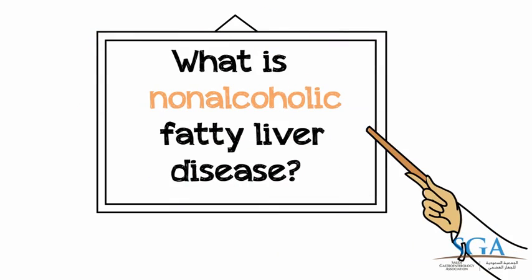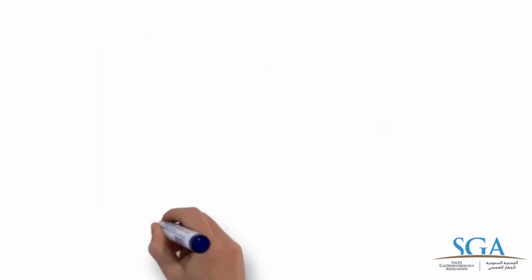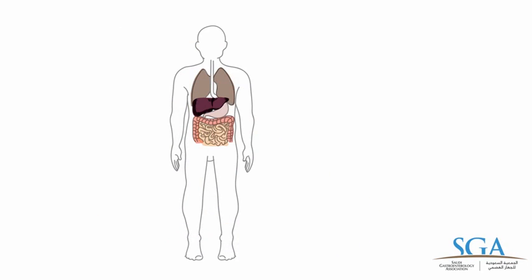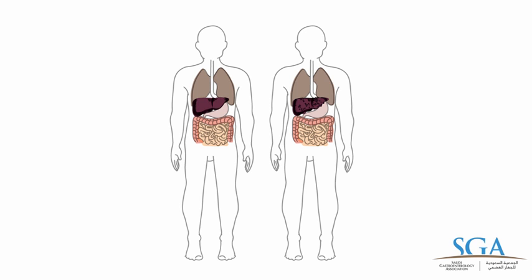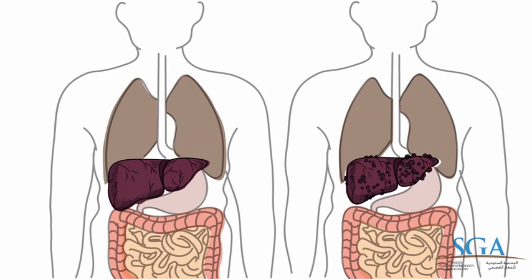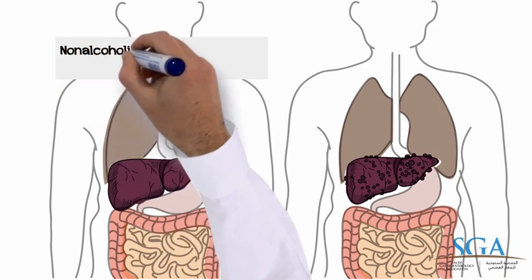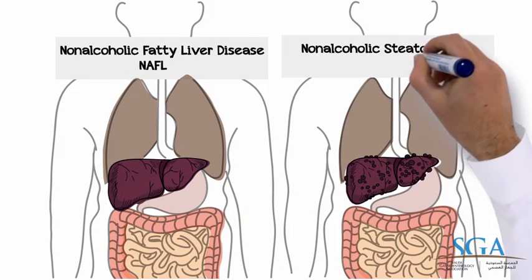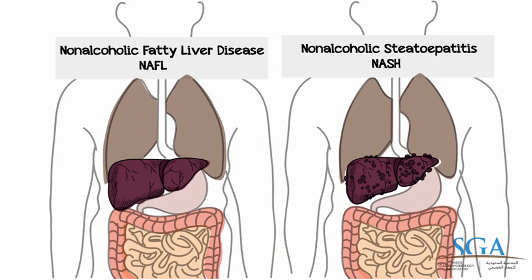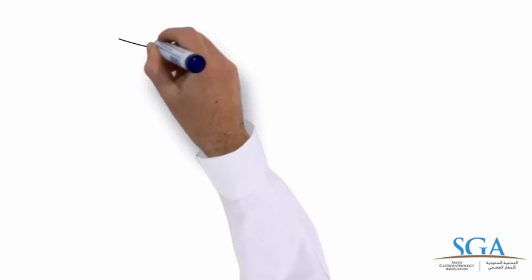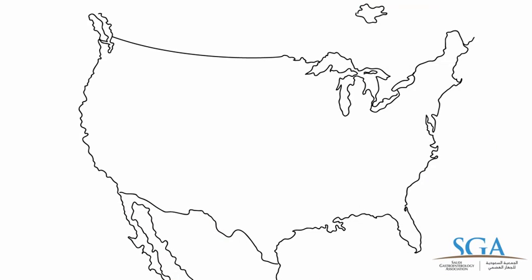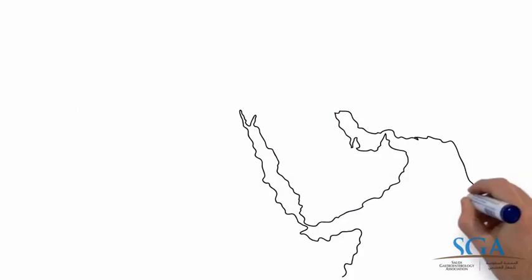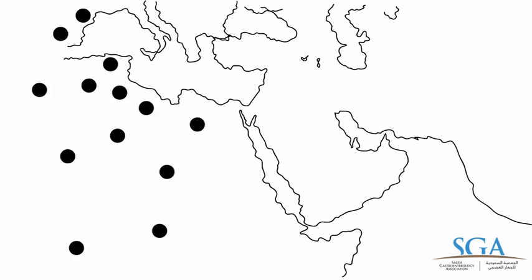What is non-alcoholic fatty liver disease? Non-alcoholic fatty liver disease is a condition in which fat builds up in the liver. There are two types of NAFLD. Non-alcoholic fatty liver, called NAFL, in which the liver has fat buildup but is not inflamed. Non-alcoholic steatohepatitis, called NASH, in which the liver has fat buildup and is inflamed. Fatty liver is now the most common cause of liver disorder in the United States and other Western countries, and is increasing in the Arabic world with the increasing rates of obesity and diabetes.